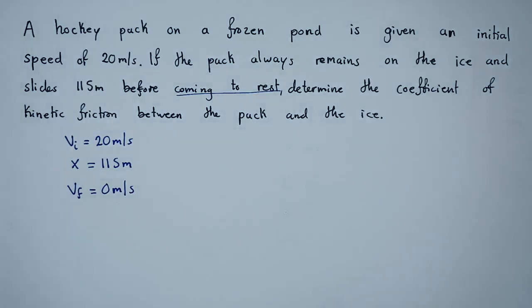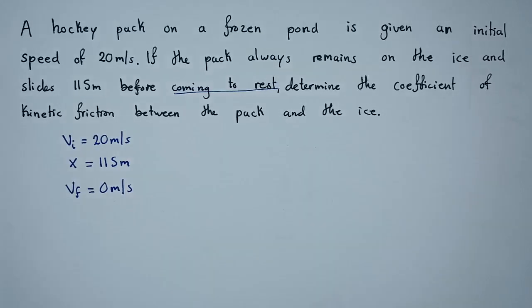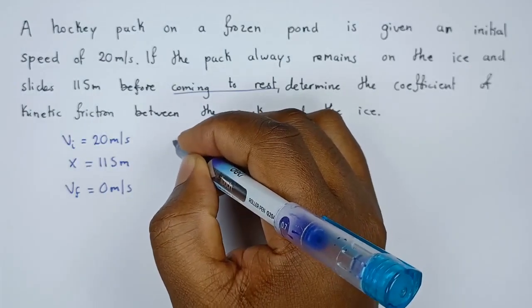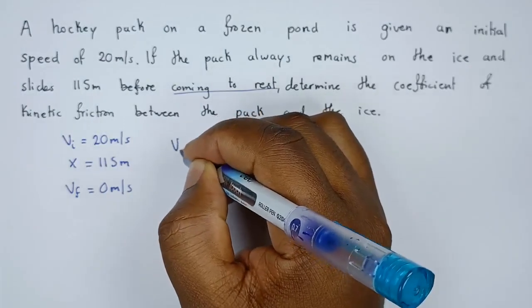So with this information, what we can opt to do first is to calculate the acceleration, then from the acceleration you can see how we can proceed from there. So to calculate the acceleration we are going to use this equation of motion from kinematics. The equation is: the final velocity squared is equal to the initial velocity squared plus 2ax, the equation independent of time.